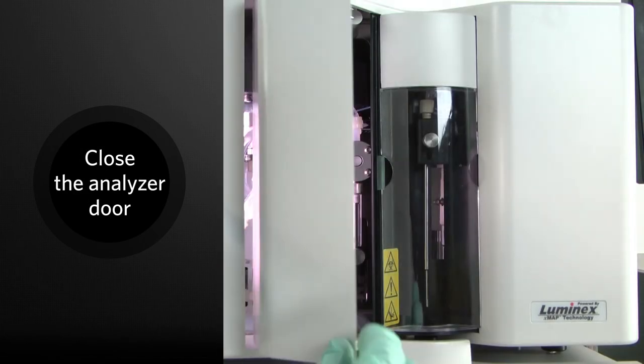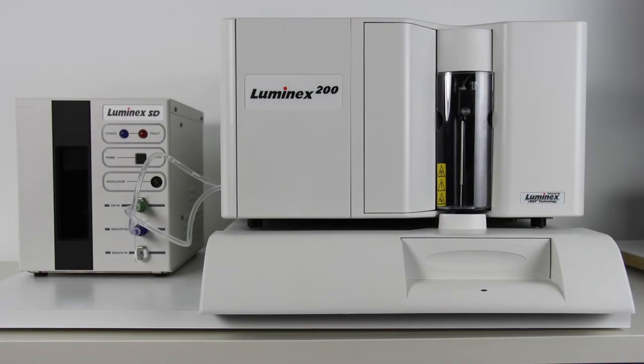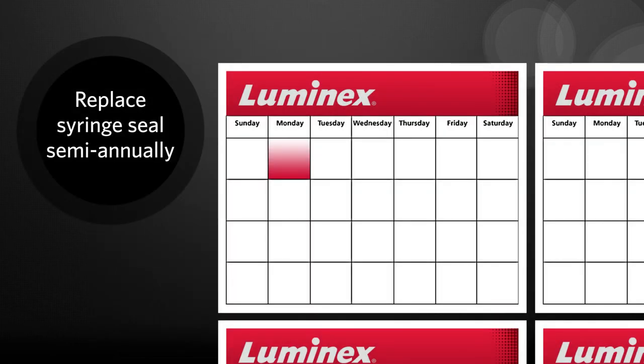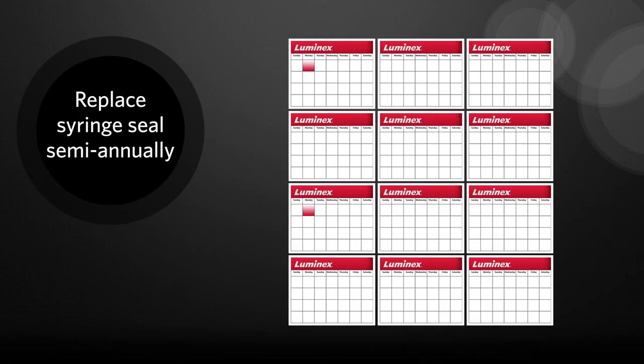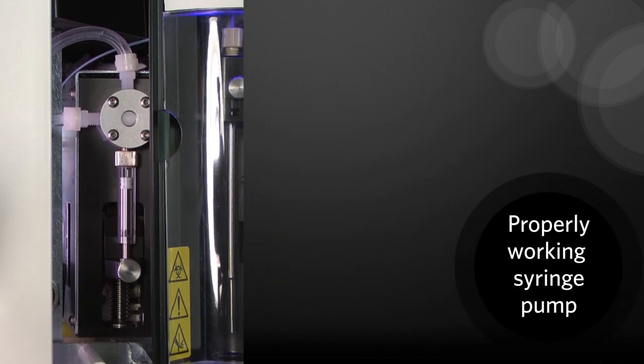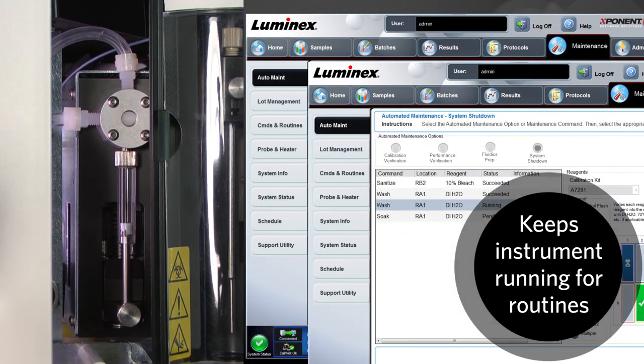Close the door on the Luminex 200. And finally, remember to change the syringe seal as part of your semi-annual maintenance or when there is a leak. A properly working syringe pump keeps the Luminex 200 working for all commands and routines.